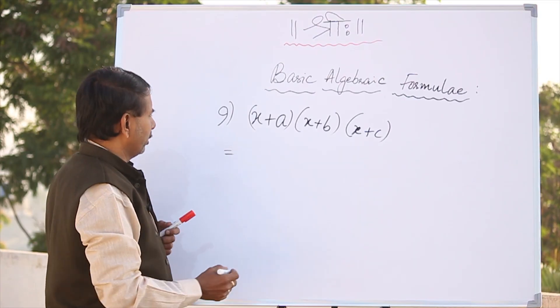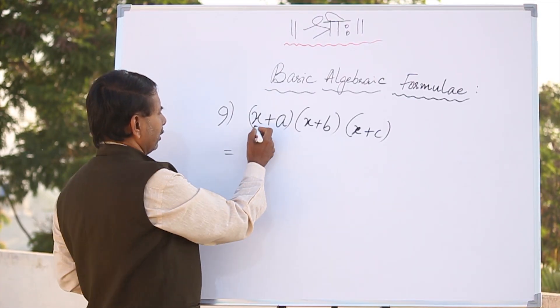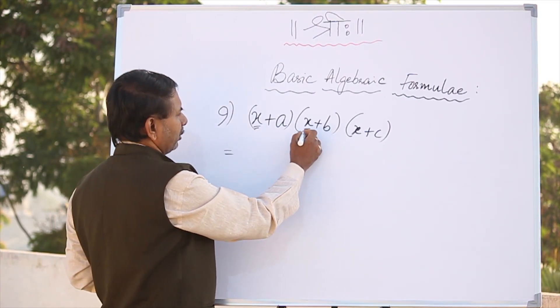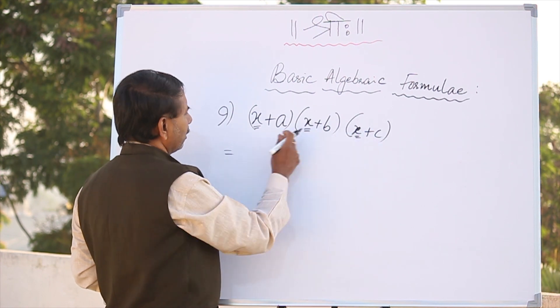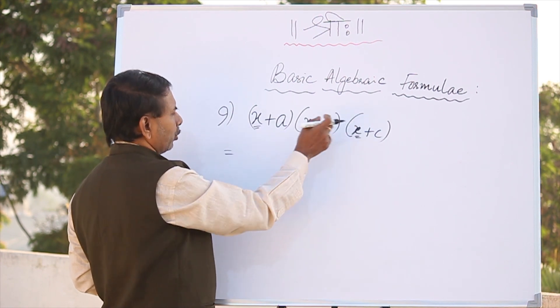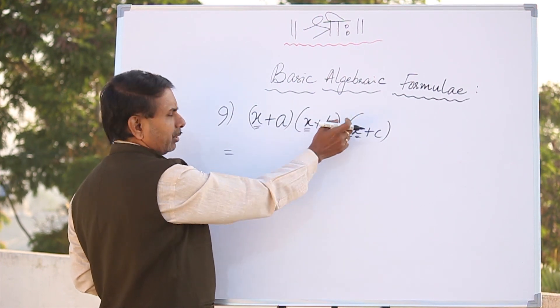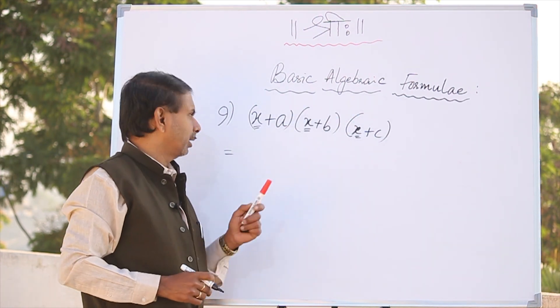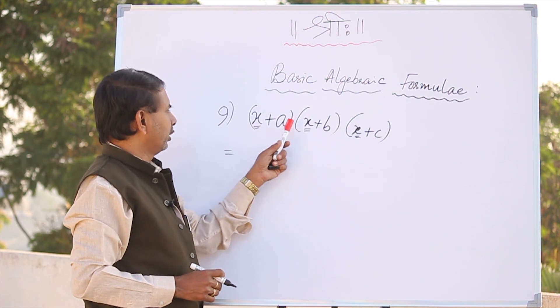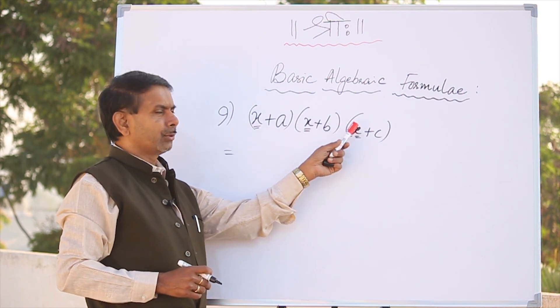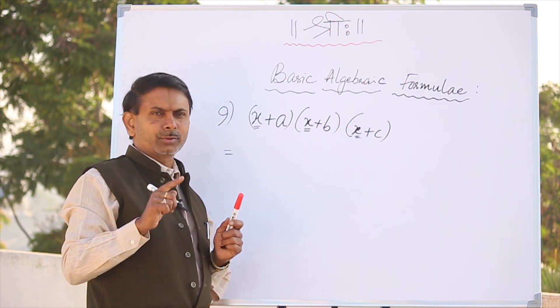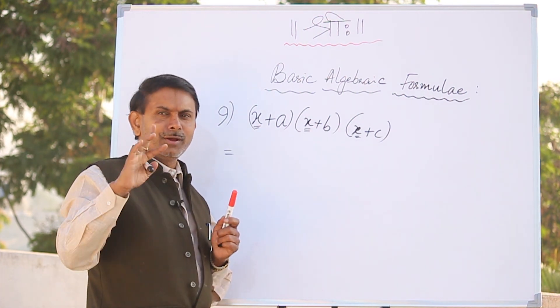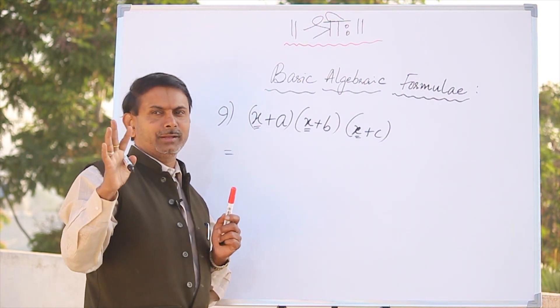Let's look at this. The terms of x is 3, a, b, c is 3. Total: 2 into 2 into 2 — 2 into 2 is 4, 4 into 2 is 8.